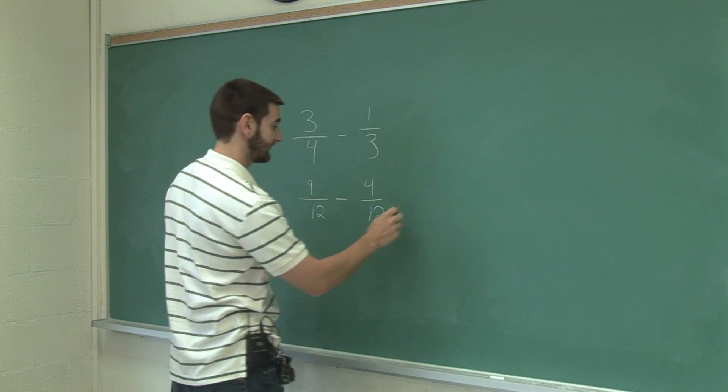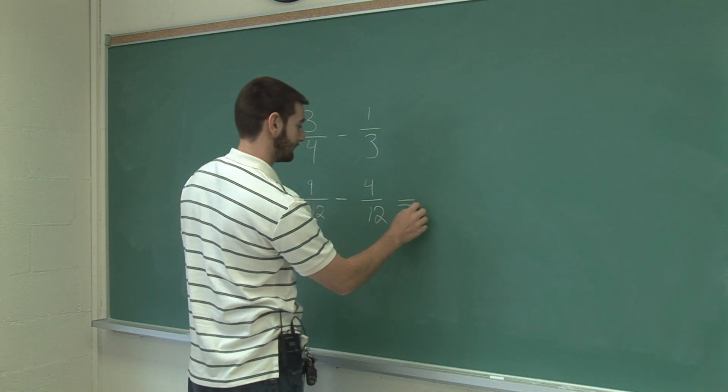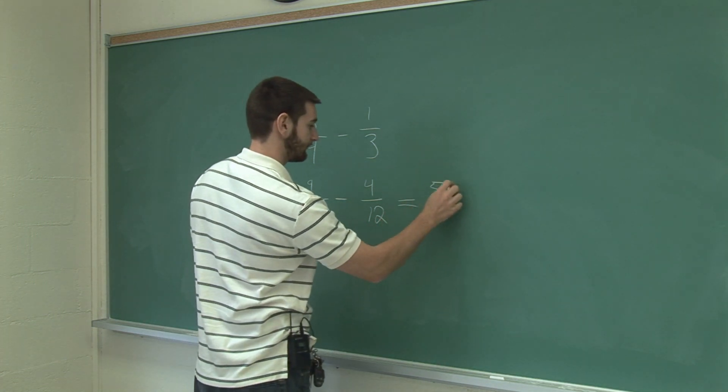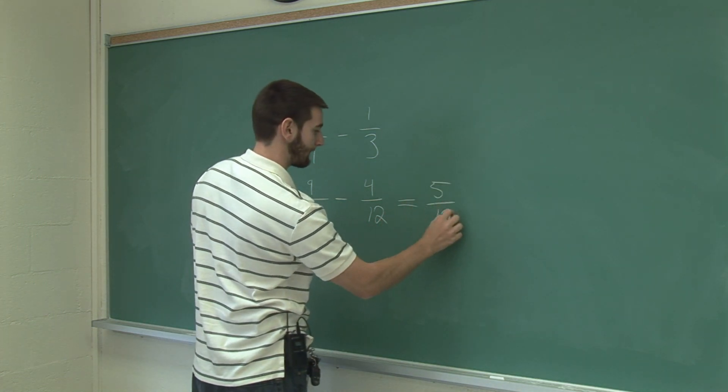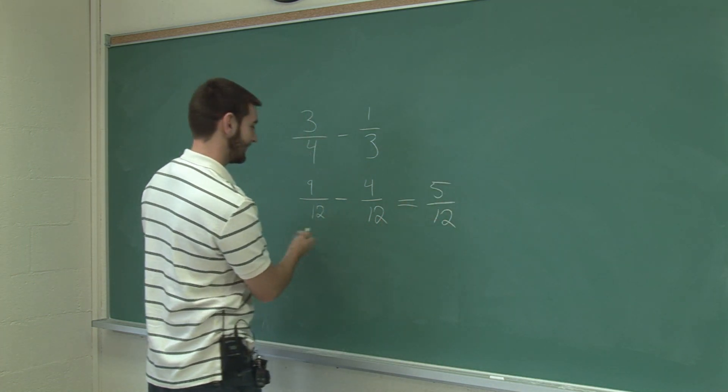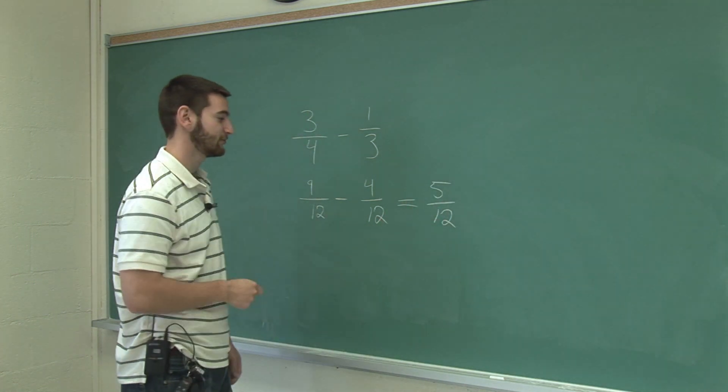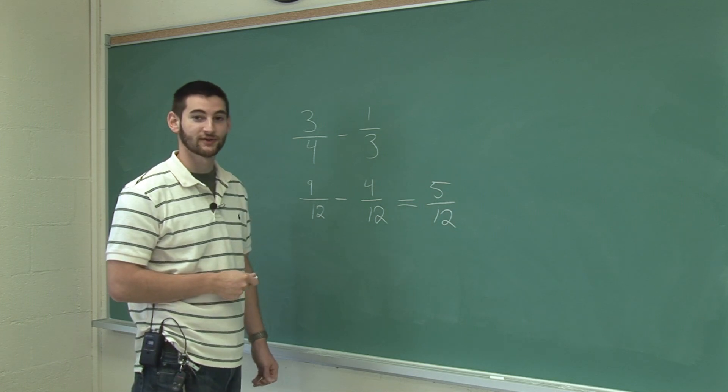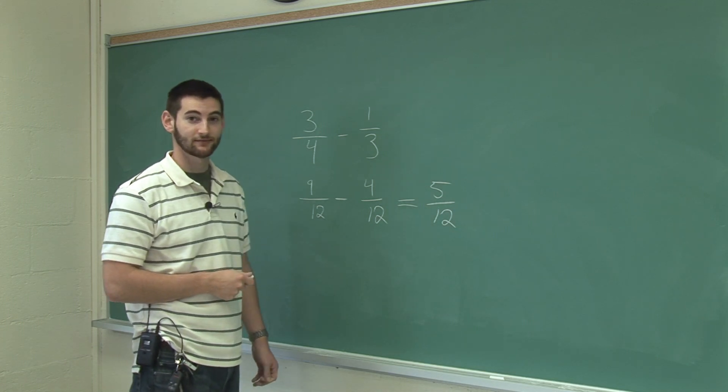9 minus 4 is 5. And that's it — that's how you subtract fractions with different denominators.